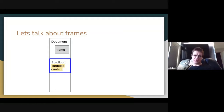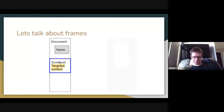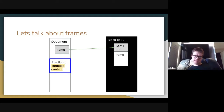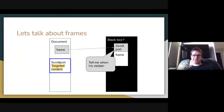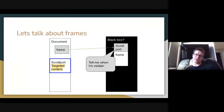Let's talk a little bit about frames. You've got a frame somewhere on the page — say, near the top of the document, maybe an ad frame. For the most part, the frame sees the embedder as a black box. However, it does have access to some bits of information. The most powerful one is IntersectionObserver, where it can say, tell me when the frame is visible.